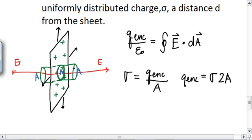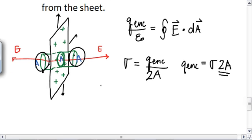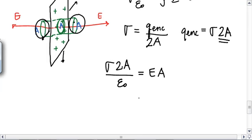All right, since there are two areas, one here and one there, I need a 2A there, actually. So, I'll put a 2 back right there. So, now let's make our substitution. Sigma 2A over epsilon naught is equal to, now my electric field is perpendicular to the area, so this will be E, and the area is A. So, then what's our electric field?